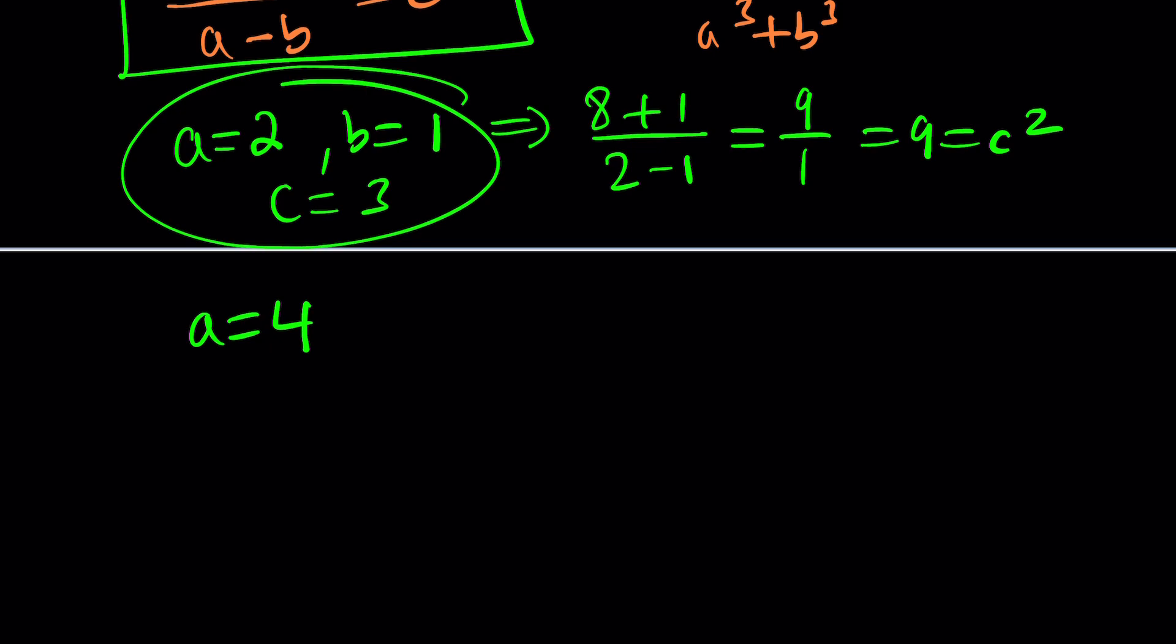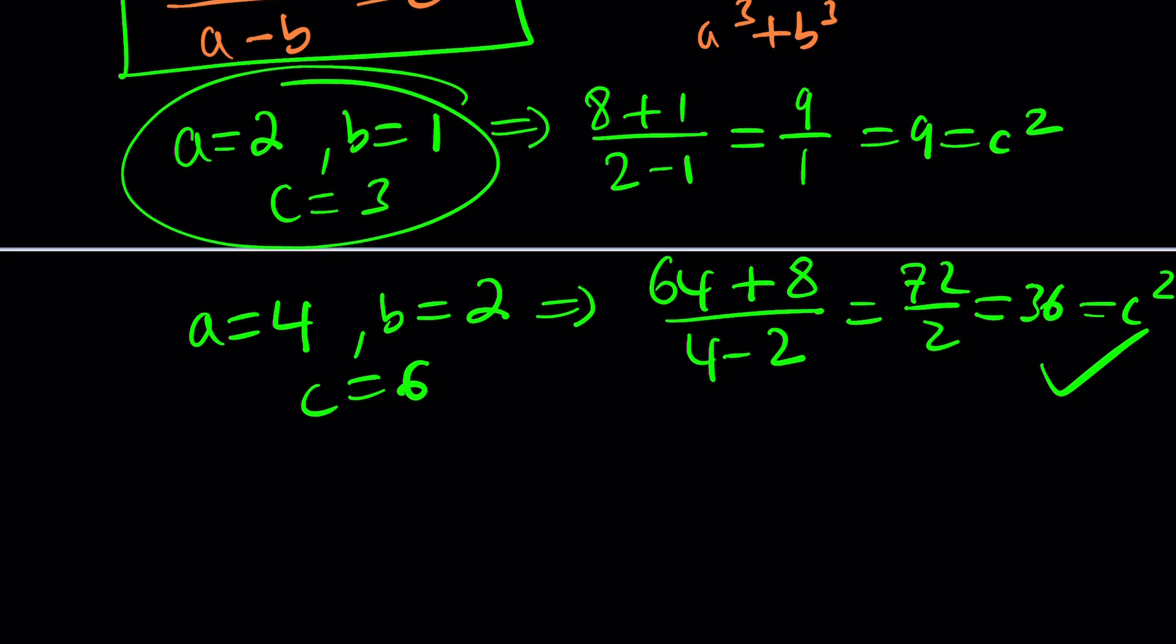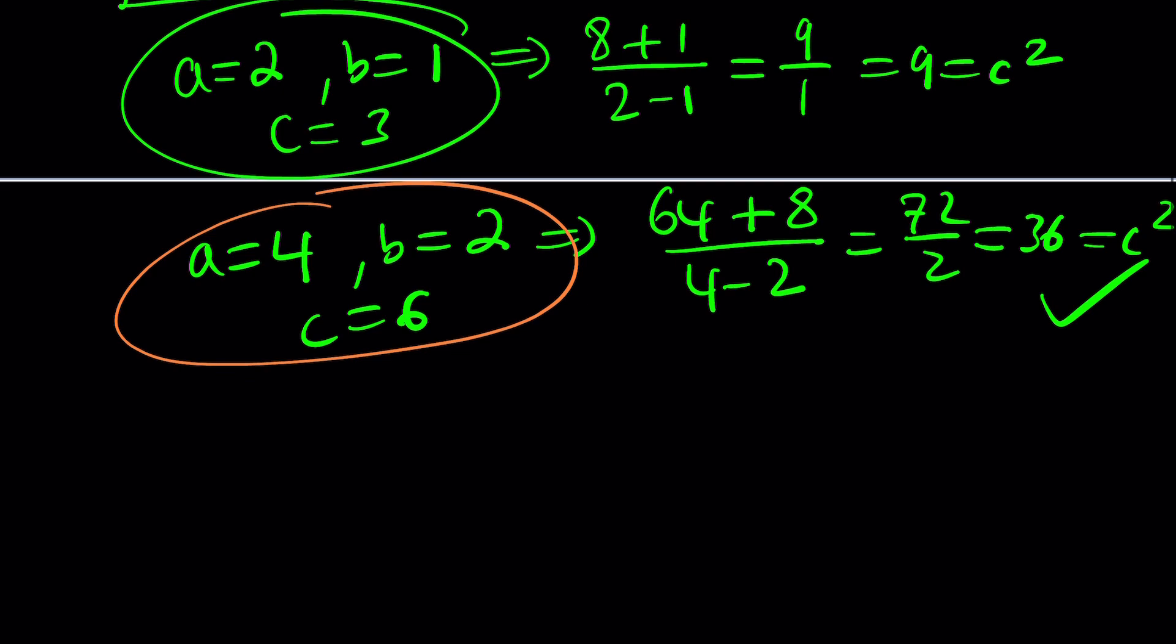If a is equal to 4, and b is equal to 2. Then, from here, we're going to get a cubed, which is 64, plus b cubed, which is 8, divided by a minus b, which is 4 minus 2. That's 72 divided by 2, which is equal to 36. And that can equal c squared because 36 is a perfect square. That's just perfect. So, that gave us this solution. Great. Another triple.